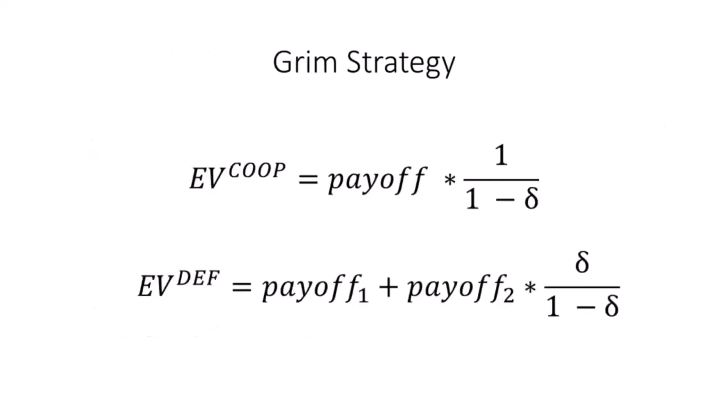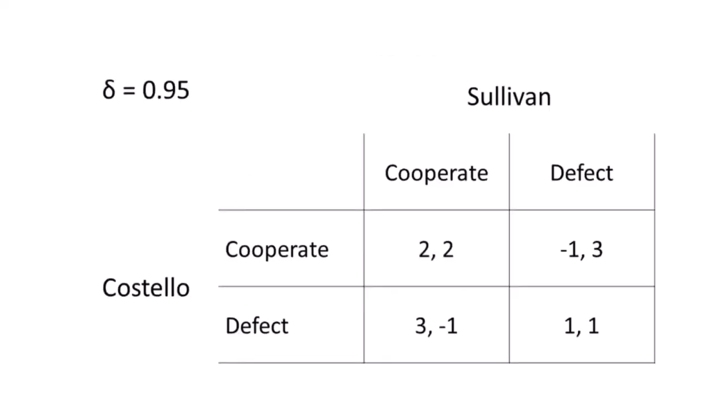These are the formulas for calculating expected value of strategies in this game type. For cooperation, we multiply the payoff times the value of expected future payments. For defection, we take the payoff gained from betrayal and add it to the expected value of all future payments. This will make more sense when we actually go through calculating them.